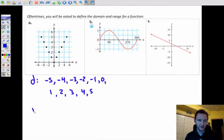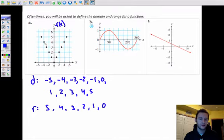And so our range are all of the y or f(x) values. So it looks like we got 5, 4, 3, 2, 1, and 0. And nothing below that, nothing above that, nothing in between. We don't have like a 2.25 or something right here. Okay. It's not included. All right.